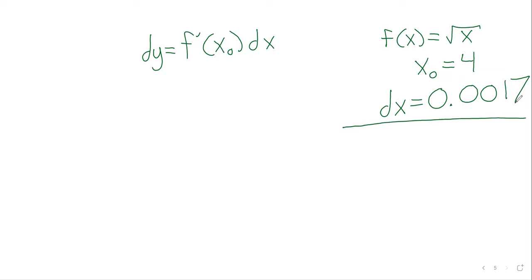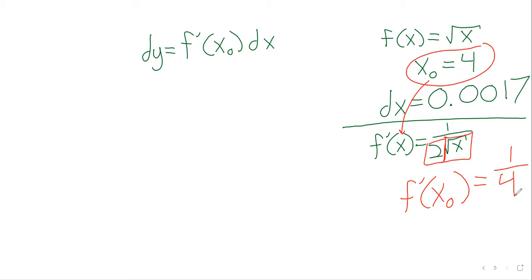I mean, you need to find the derivative. You need to find f prime of x. You now are going to take x sub zero and plug it in. And when we do, we get one over two times the square root of four. The square root of four is two. So two times two is four.